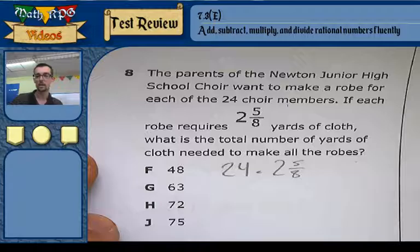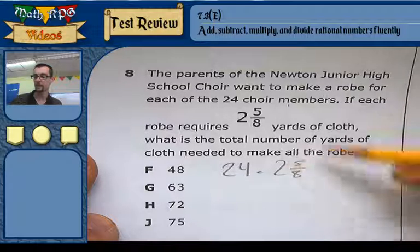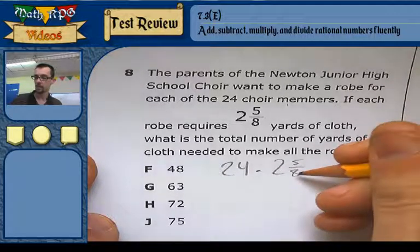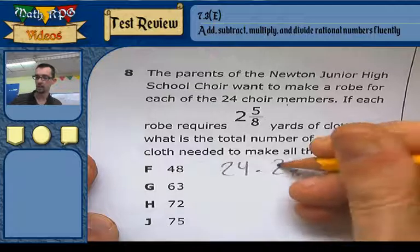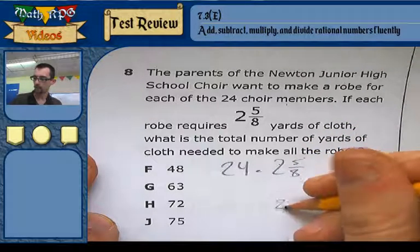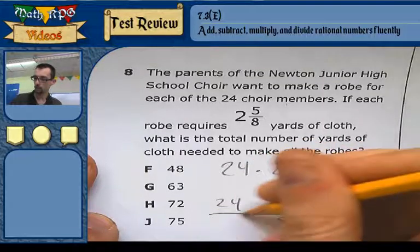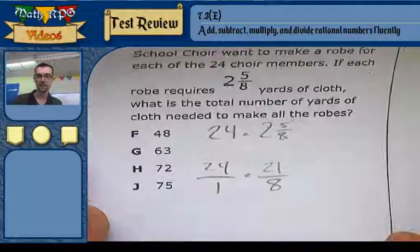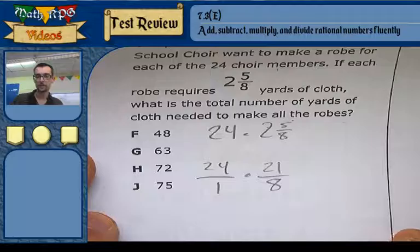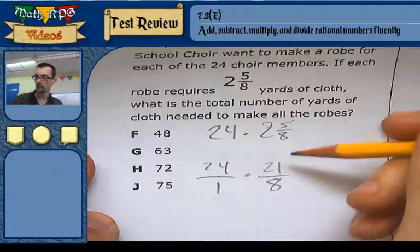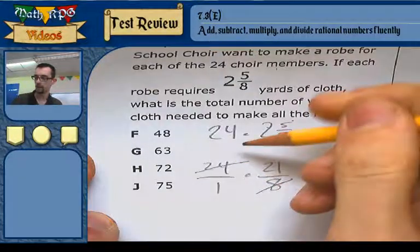So right away, the first thing I want to do is turn this mixed number into an improper fraction. That's done by multiplying 8 times 2 and adding the 5, that'll give me 21 eighths. And this 24 I'm going to put over 1 so it's a fraction. Again, I can simplify things a little bit here because I have an 8 on the bottom and an 8 here, 8 times 3. So the 8's canceled out.